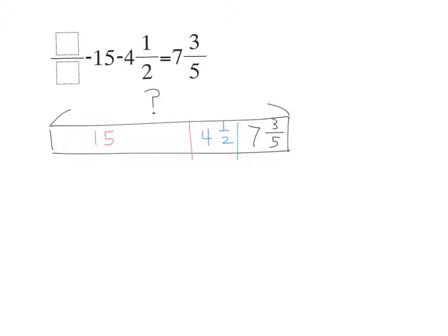I've drawn this problem into a tape diagram now. I know that I have some unknown total amount, but if I take away fifteen from it and I take away four and a half from it, I'll end up with seven and three-fifths. So how can I find out what my unknown blank space amount is? Lauren? You can add fifteen. You can add fifteen. You got it. If I add up all these parts, I'll find out how big the total part is, right? So I have to add fifteen plus four and a half plus seven and three-fifths.